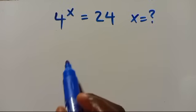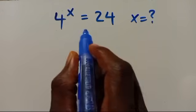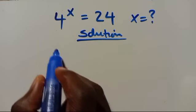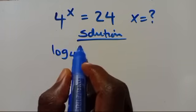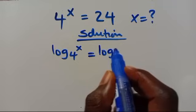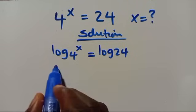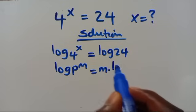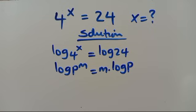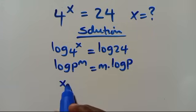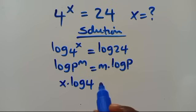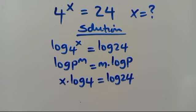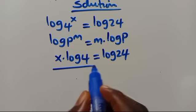What is the value of X given that 4 to the power of X equals 24? For the solution, let's introduce log to both sides, giving us log of 4 to the power of X equals log 24. Recalling that log P to the power of M equals M multiplied by log P, we have X times log 4 equals log 24. From here, let's divide through by log 4.